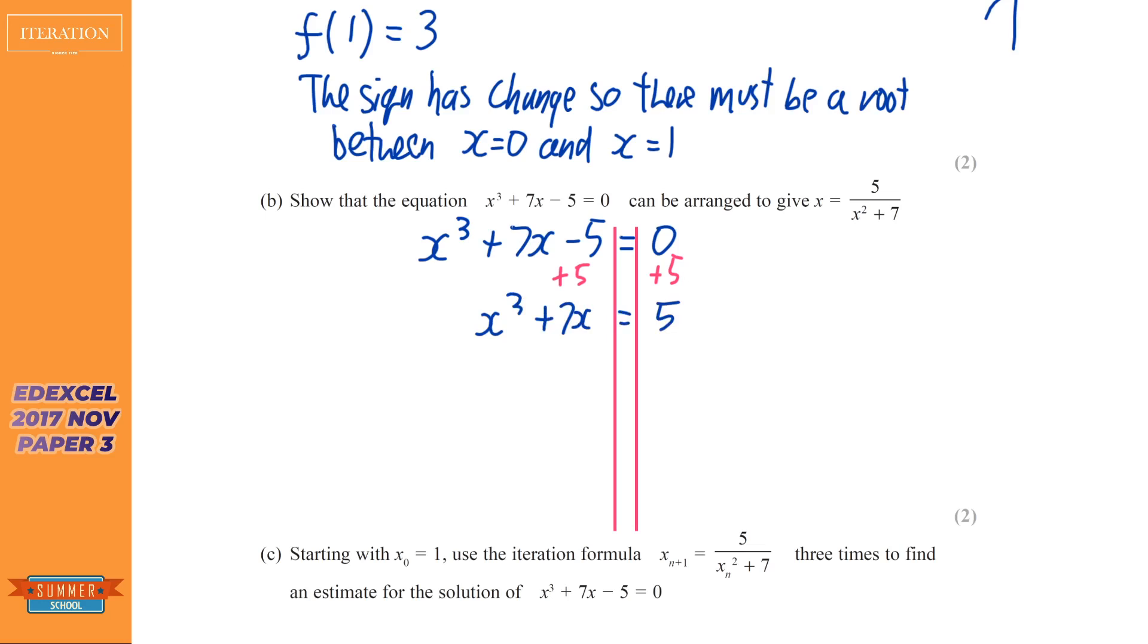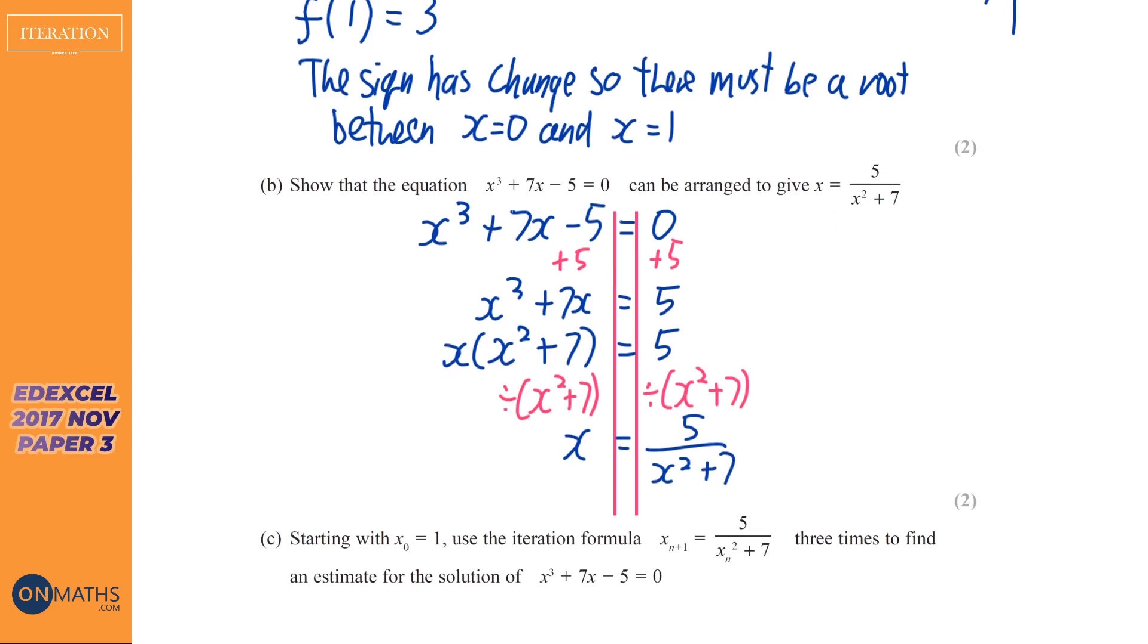So let's add five both sides. And so we're going to have x cubed plus seven x equals five. Next thing I'll do is factorize the left-hand side, because we know we've got to split up the x and the x squared. So I'm just going to factorize it. Then the last thing we're going to do is divide by x squared plus seven. So we've got x equals five over x squared plus seven, and that's the formula that, or the equation that we're asked to get.